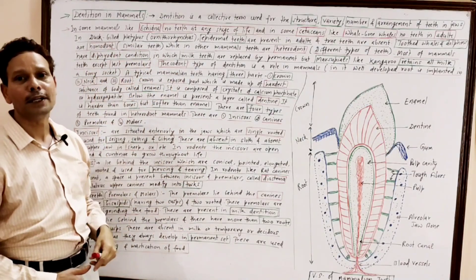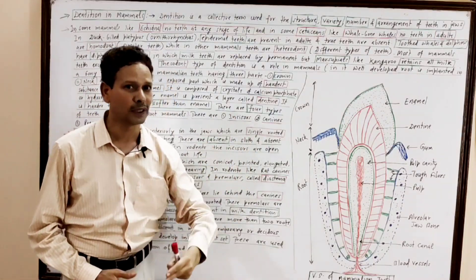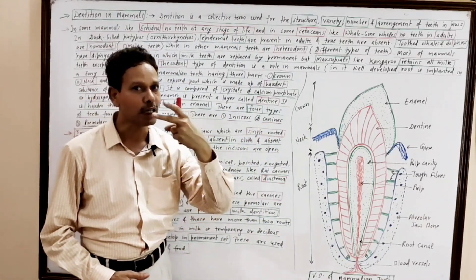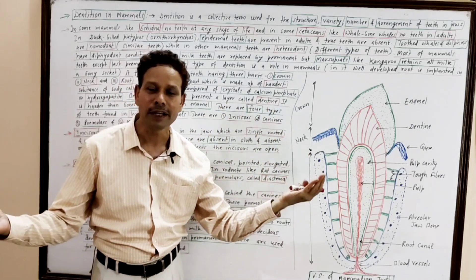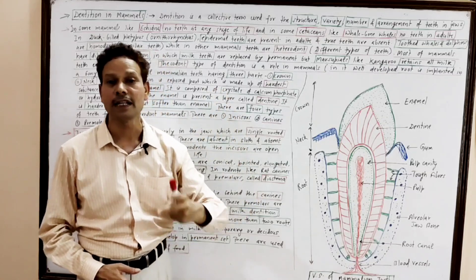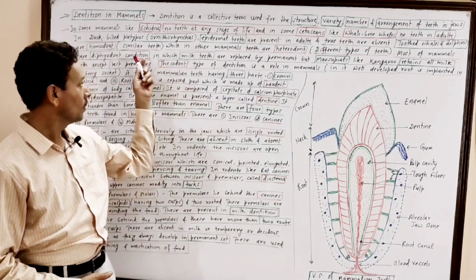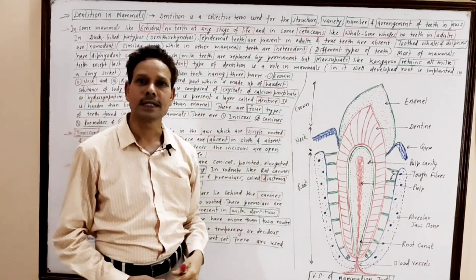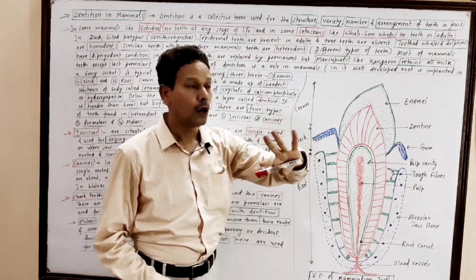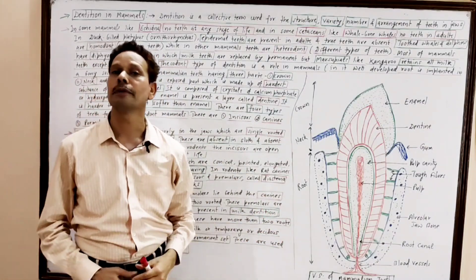The mammalian teeth are diphyodont. It means the teeth develop in two sets. One is temporary teeth, or milk teeth, or deciduous teeth. This milk or temporary set is replaced by a permanent set. But in case of marsupials, kangaroos, all milk teeth are retained, except the last premolar.